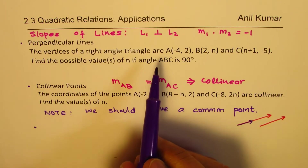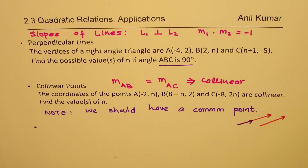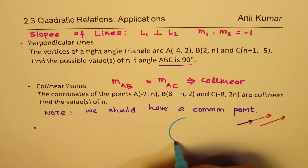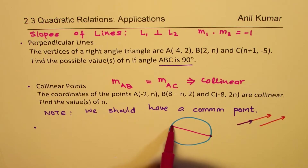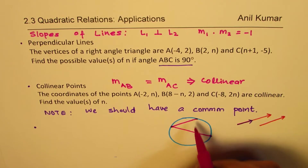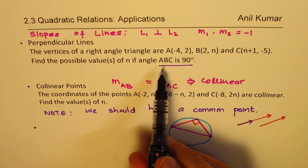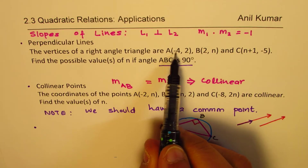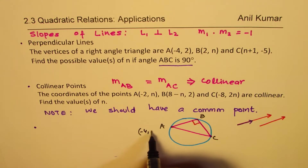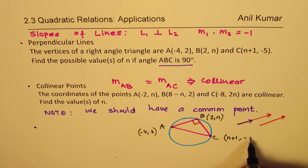In the first question, we are seeing triangle ABC is a right angle triangle. You'll recall that in a circle, if you have two points on the diameter and any other point on the semicircle, whatever triangle you make will be a right angle triangle. So we have a right angle at B, with A(−4, 2), B(2, N), and C(N+1, −5).